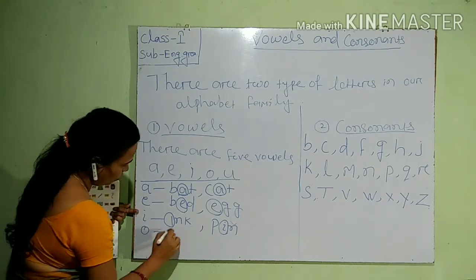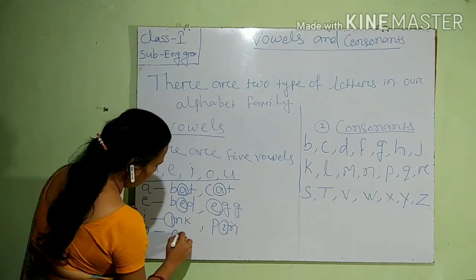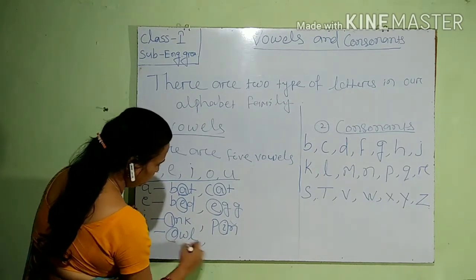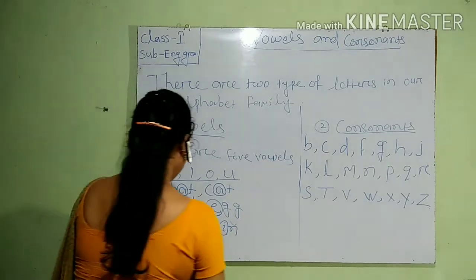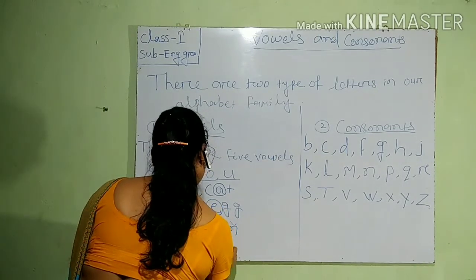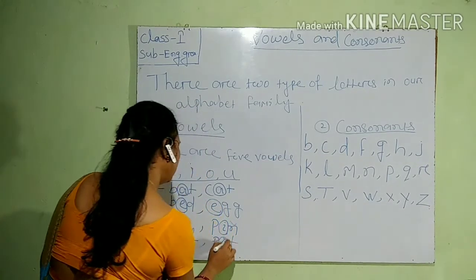O vowel sound words. O, W, L — Owl. P, O, T — Pot.